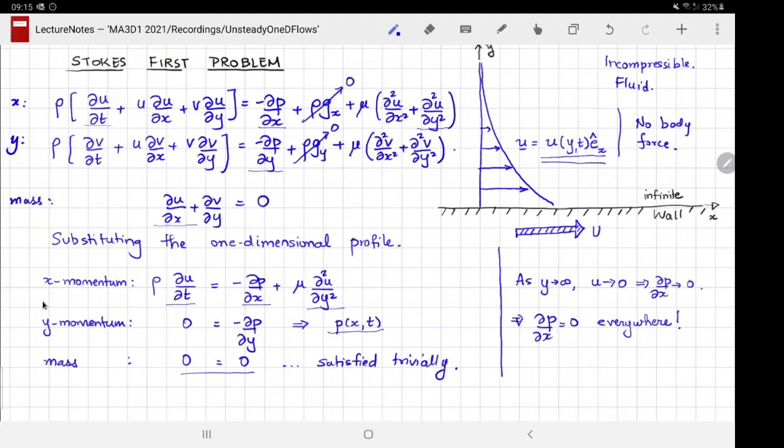If we did not initially assume the flow has only one component, but also assume there could be a y component perpendicular to the wall, then you notice that ∂v/∂y would be zero, which means v is a constant in y. Because v must be zero on the wall at one value of y, v must be zero everywhere.